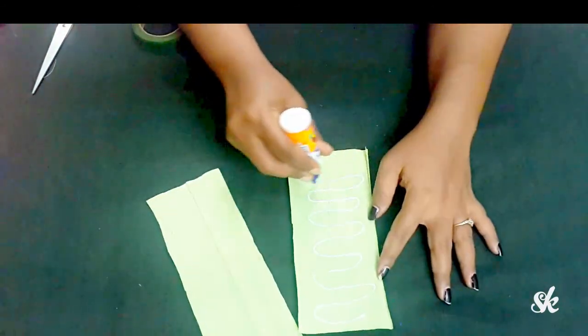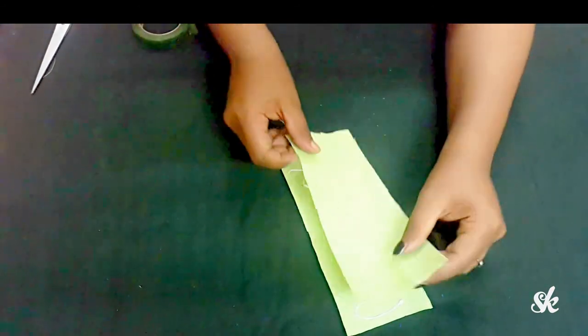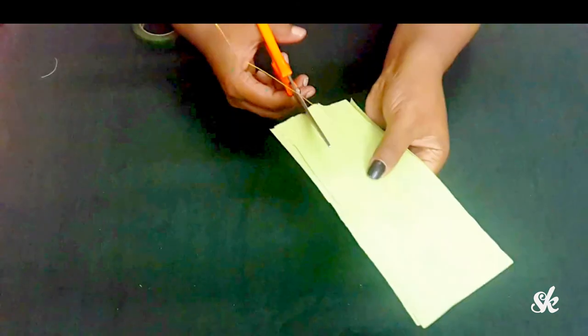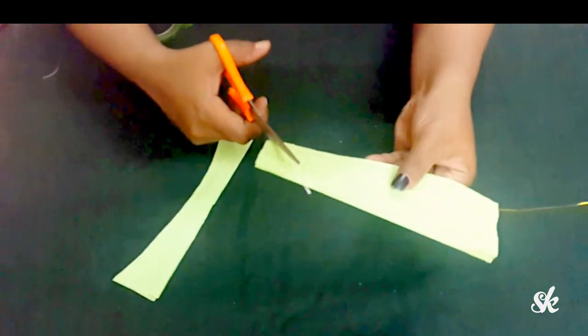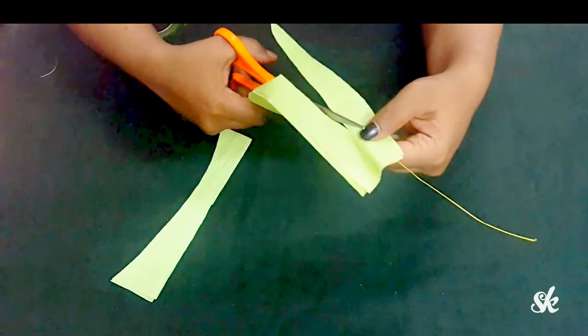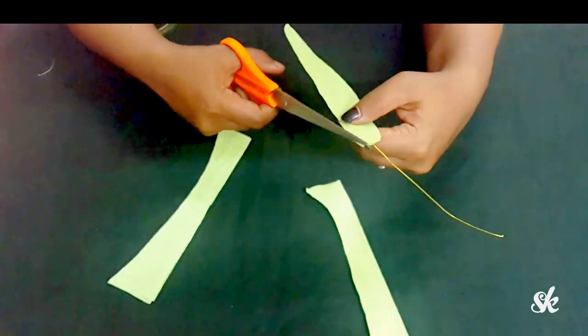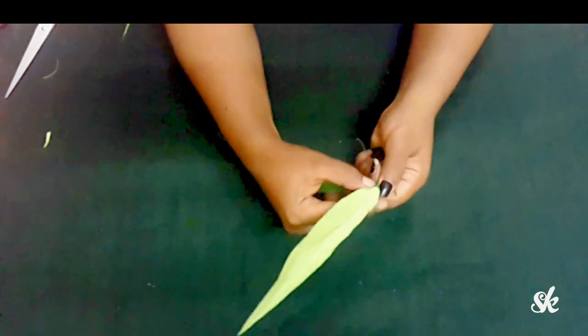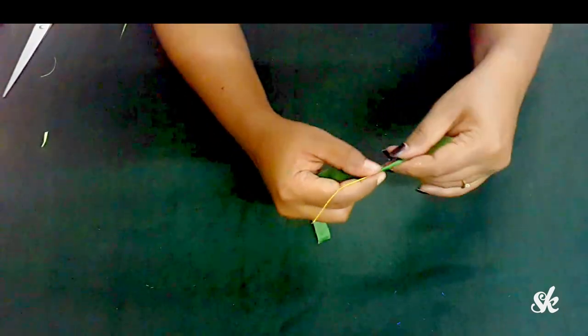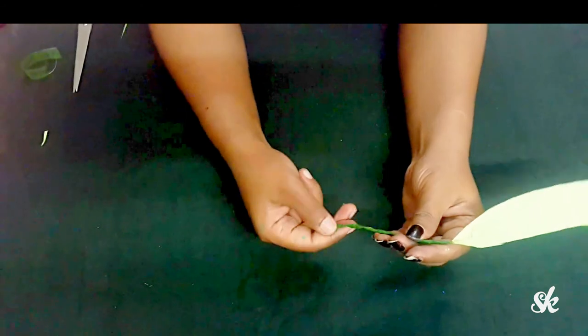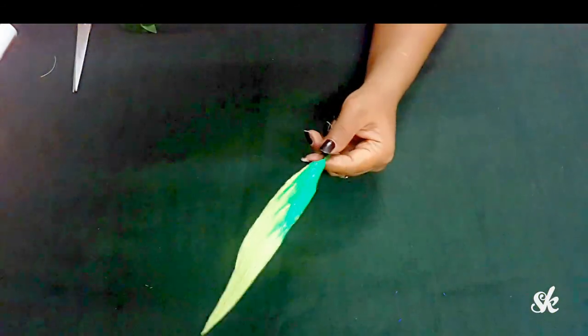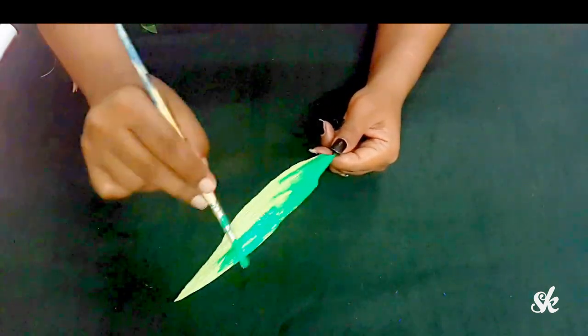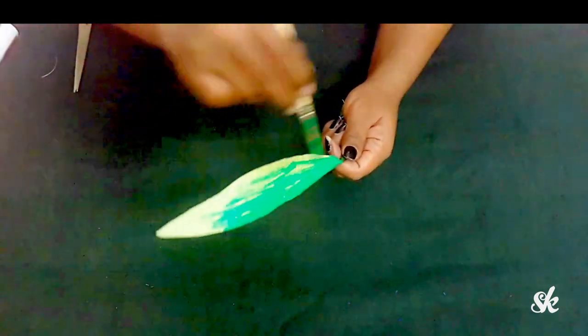For leaves, take out two green crepe paper strips and stick them together with the metal wire in between for shaping the leaves. I think you've noticed one thing: my leaves are faded. My search for dark green paper ended up with this light green color, but I have a brilliant idea. Can you guess? Yeah, painting my leaves with green acrylic color. See, it really works.